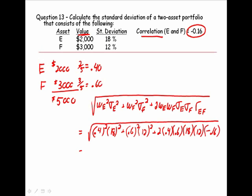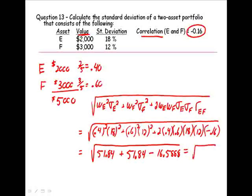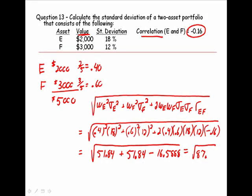Underneath the radical, we've got 51.84 plus 51.84 again minus 16.5888. It gives me the square root of 87.09, which is 9.33%.